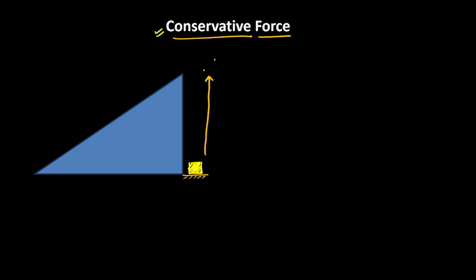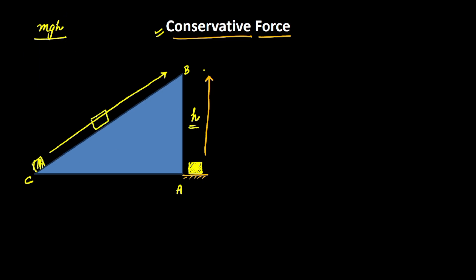We know that the gravitational force is a conservative force, so the work done against this force would not depend on the path. If I am taking this box from position A to position B to a height of H, the work done came out to be mgH. The same work done should come if I take this box from position C to position B, because I am taking the box to the same height H. Now imagine the box is at a particular position on an incline at angle θ. I can resolve mg into two components: mg cos θ and mg sin θ.